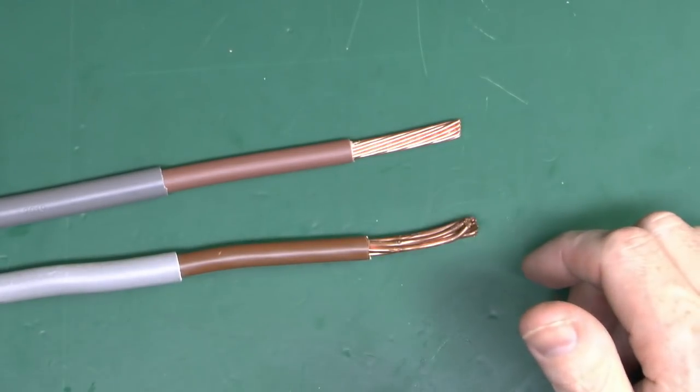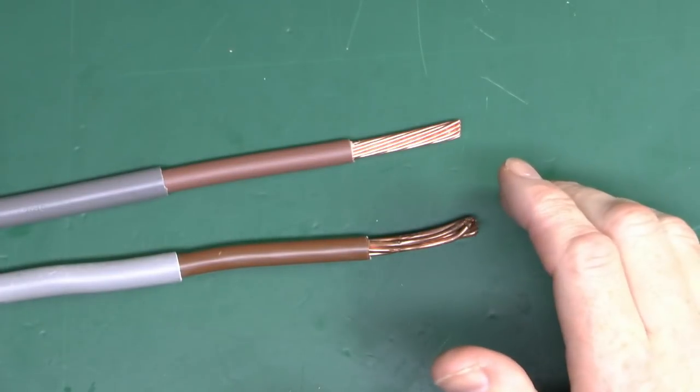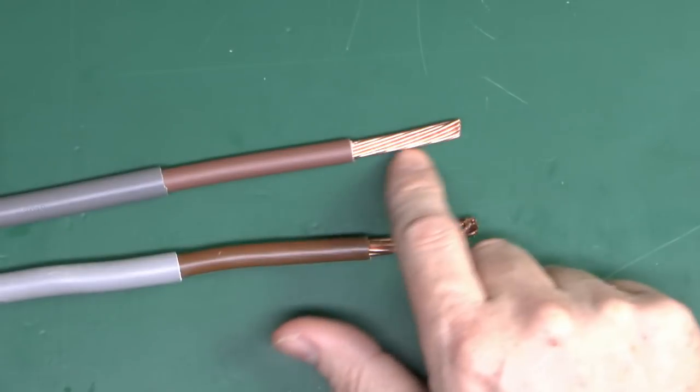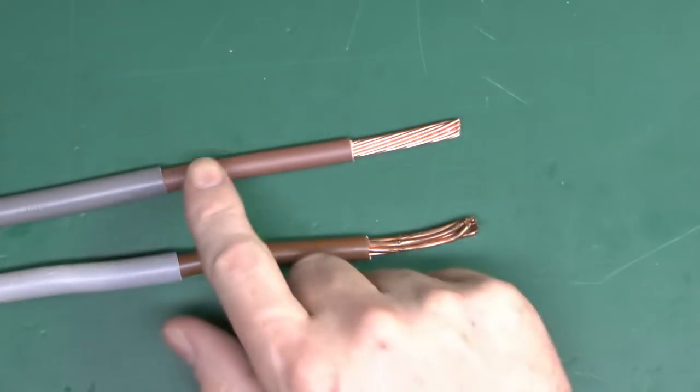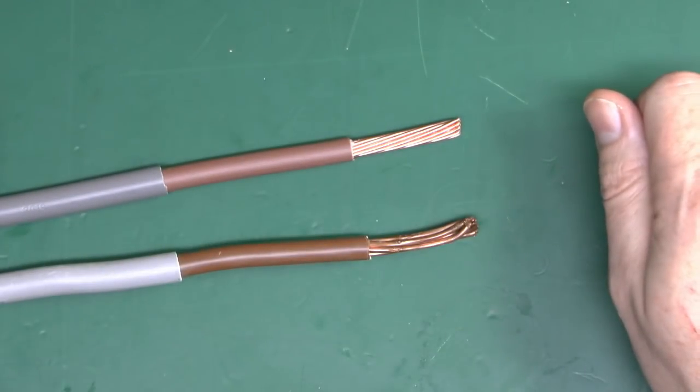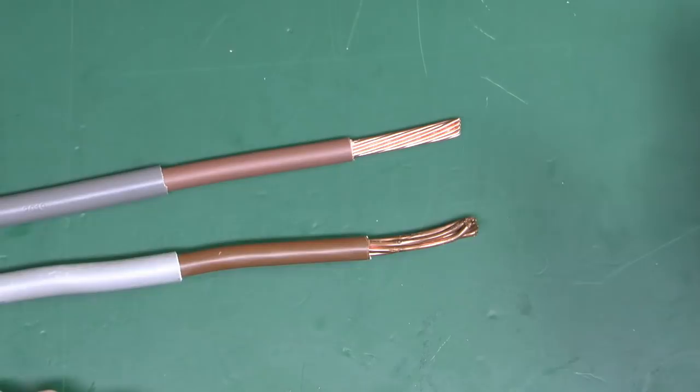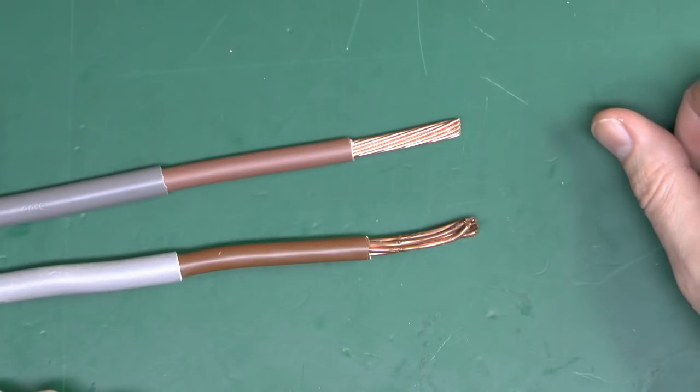So here's our two lengths of wire here, both basically the same thing. These are 6181Y, which is a single core there, brown insulation in the case of these two, and then a grey outer sheath there, which is normally used to connect your consumer unit to the electricity meter in a domestic property. Other sizes are available for different locations.